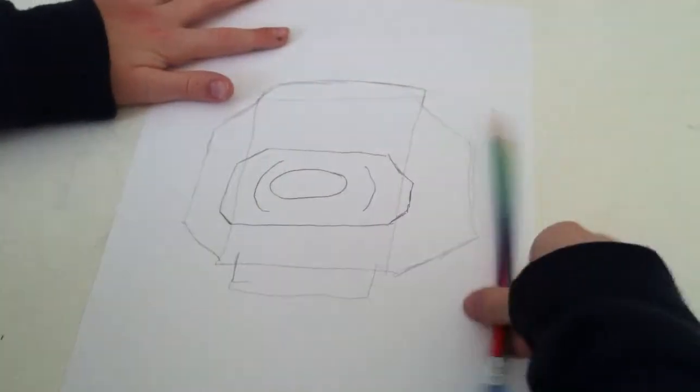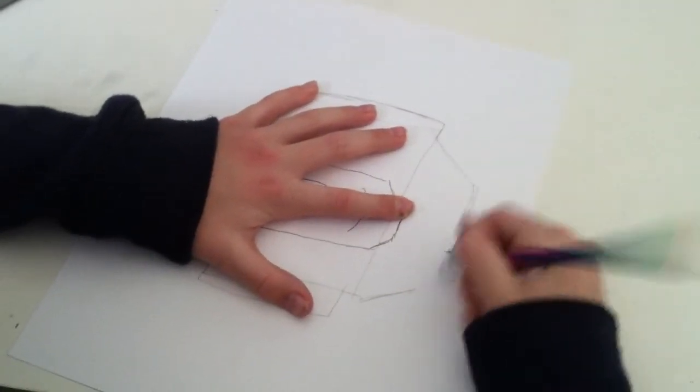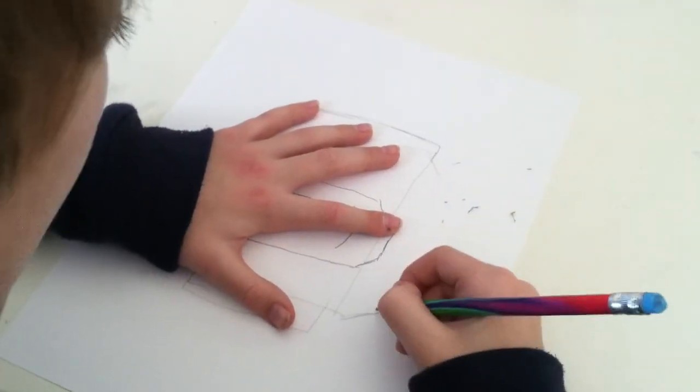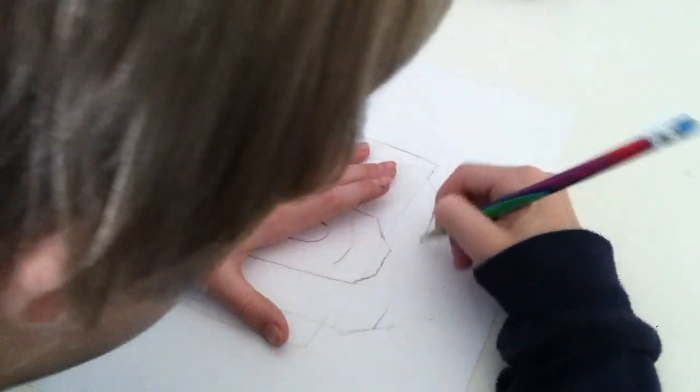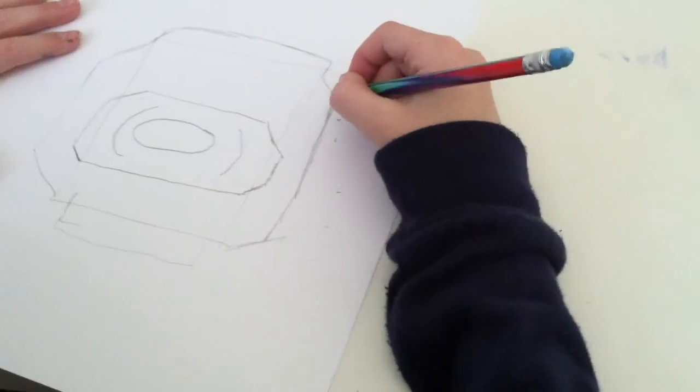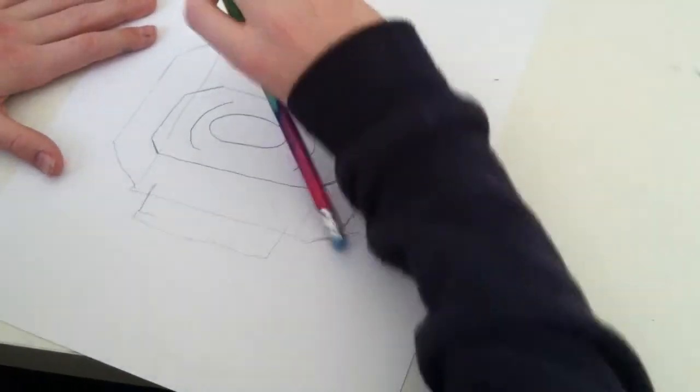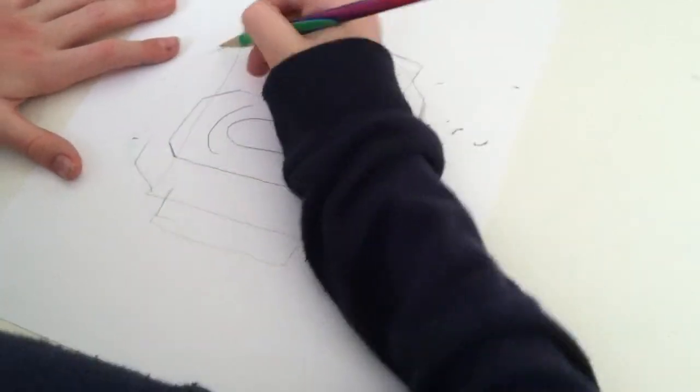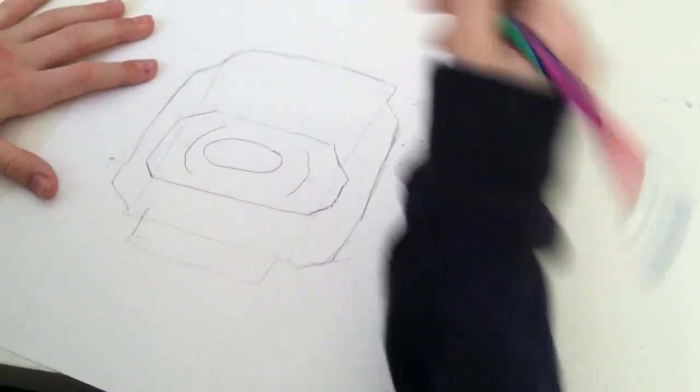And then draw... erase some of this side. And hopefully you drew light, so it's easy to erase. And then draw that, just the same again. Erase some of this side. And then that looks good.